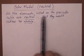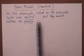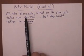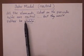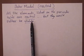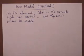All the elements listed on the periodic table are neutral, but they'd rather be stable. This statement here is one of the driving forces behind a lot of the chemistry we're going to be doing. In wanting to become stable, they can no longer be neutral, so we're going to have electrons moving from atom to atom.